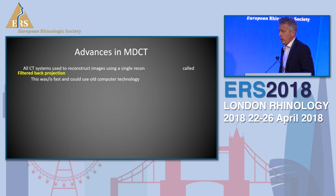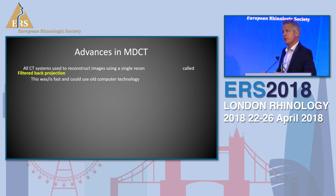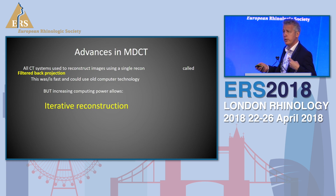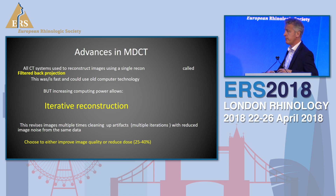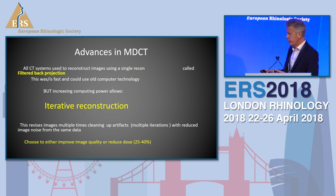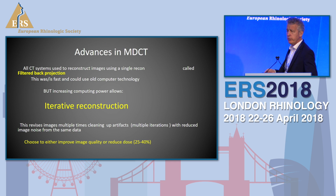What about advances in multi-detector CT? Well, all CT machines used to reconstruct just once and they called it filtered back projection - this is fast and can use older CT. But now we use what's called iterative reconstruction. Basically it means that each image is reviewed multiple times to remove a lot of the noise, and therefore you reduce the image noise from the same data. So you can use that either to improve image quality or reduce the dose.